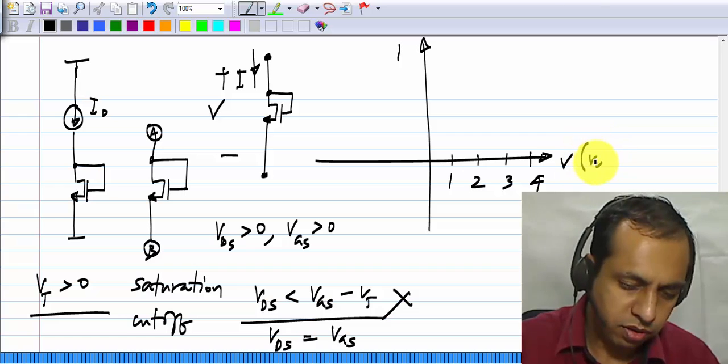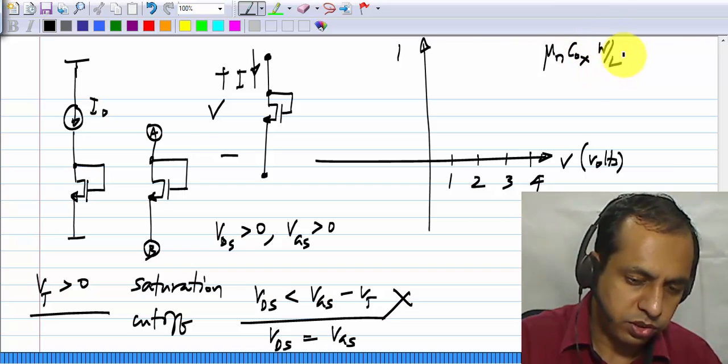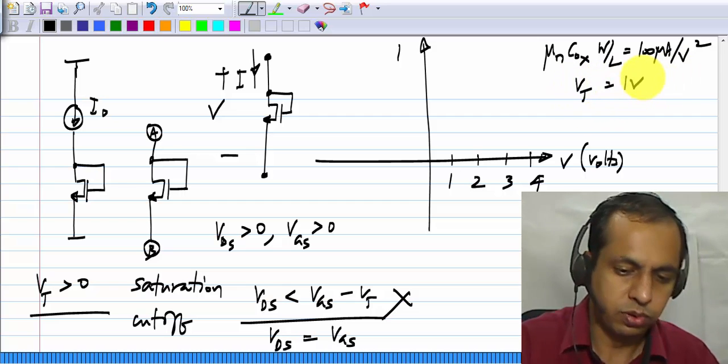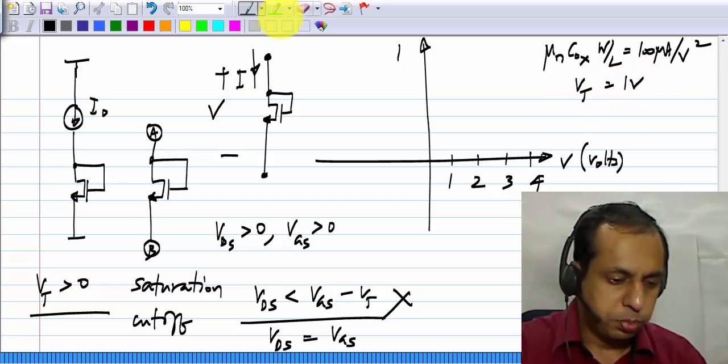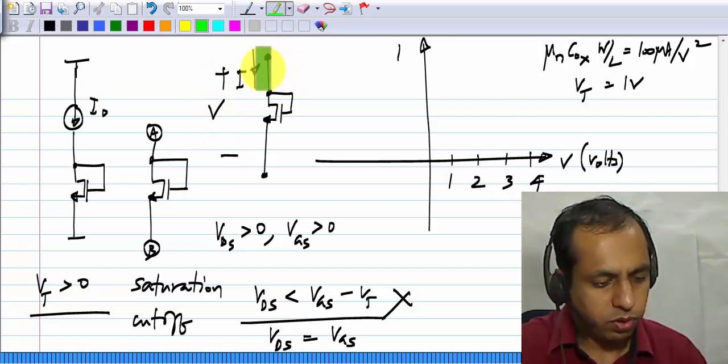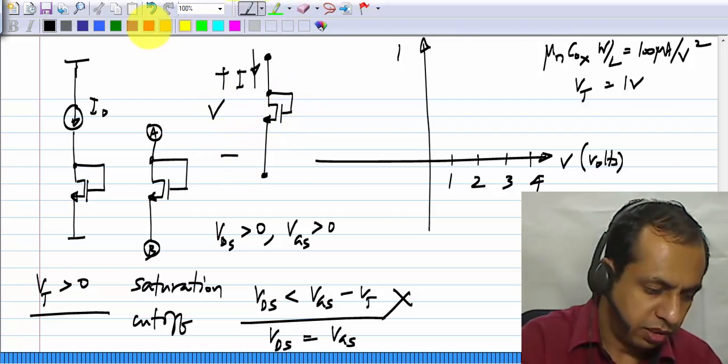Let us say 1, 2, 3, 4 volts, and I will consider the same transistor as before, where mu n C ox W by L is 100 micro ampere per volt square, and V t is 1 volt. So, it is pretty obvious that if this voltage V is less than 1 volt, no current can flow, because V g s is smaller than 1 volt, and the transistor is cut off.